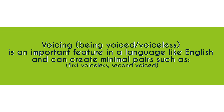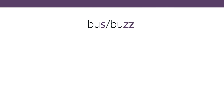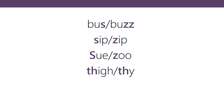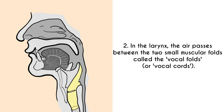Being voiced or voiceless is an important feature in English and can create minimal pairs such as bus/buzz, sip/zip, sue/zoo, thigh/thy, fan/van. When learning English you need to gain full control over the voicing process so that you can distinguish sounds you hear — 'bus' versus 'buzz' are two different words — and so that you can produce those words accurately when speaking.